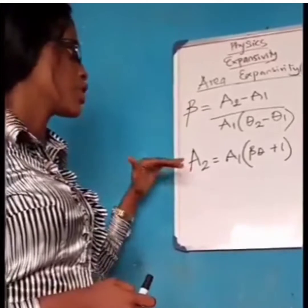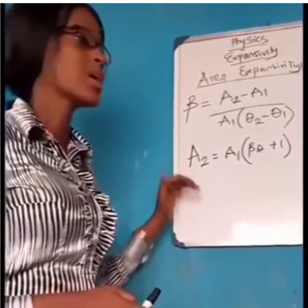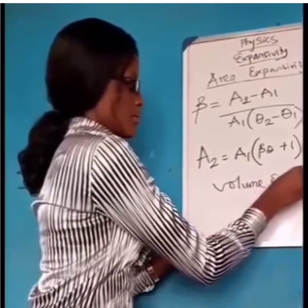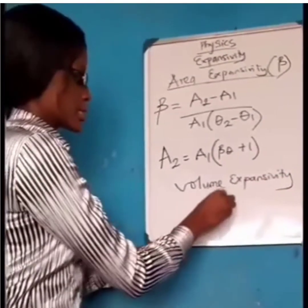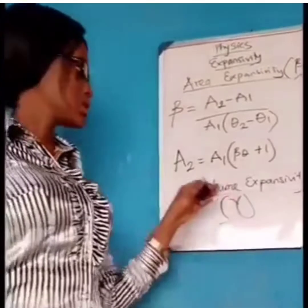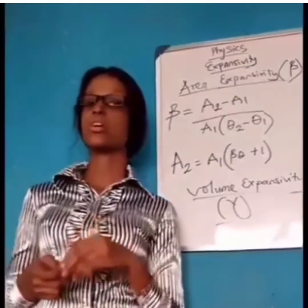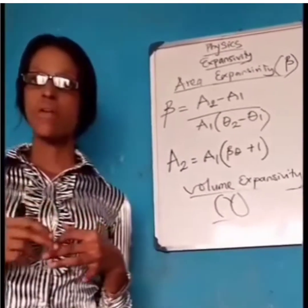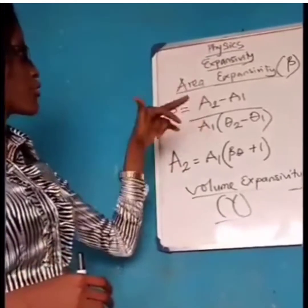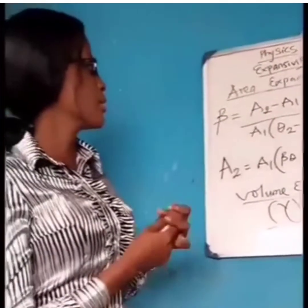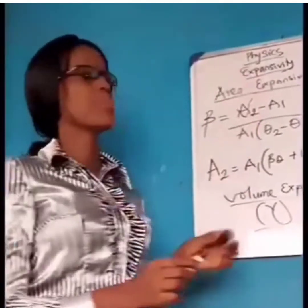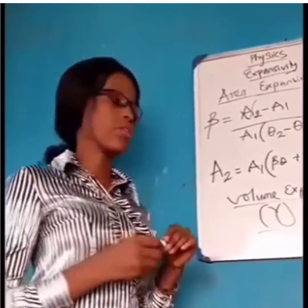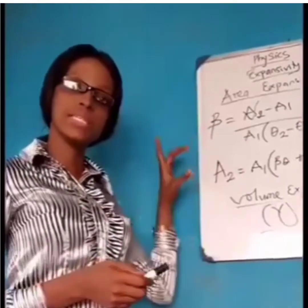In essence, when you are asked to find your new area, you can easily use this formula. The third type is volume expansivity, which is denoted with the sign gamma. Volume expansivity is defined as an increase in volume per unit volume per degree rise in temperature. Instead of A, you replace it with V, giving: gamma equals V2 minus V1 over V1 bracket theta 2 minus theta 1. And to find the new volume, the same approach applies.